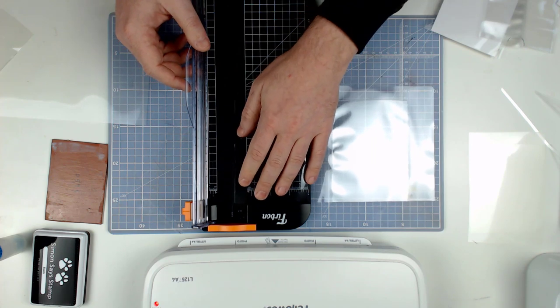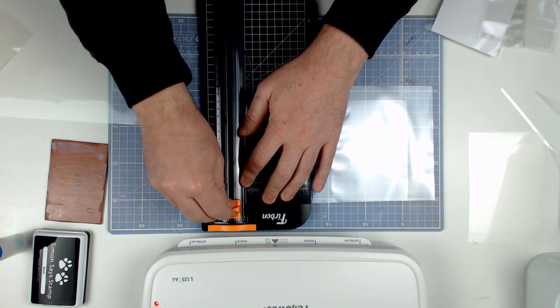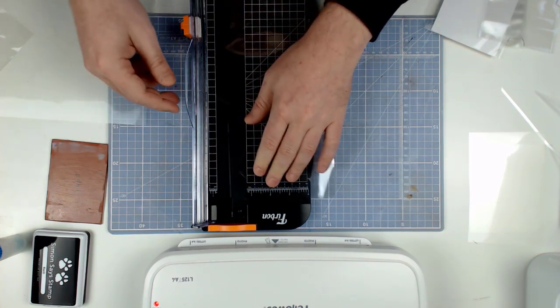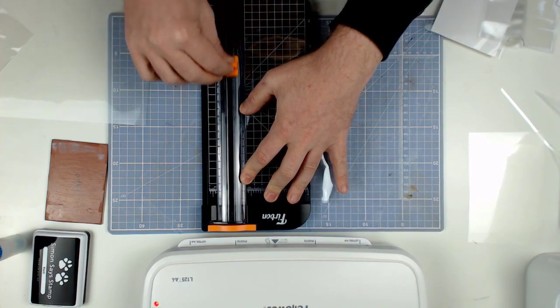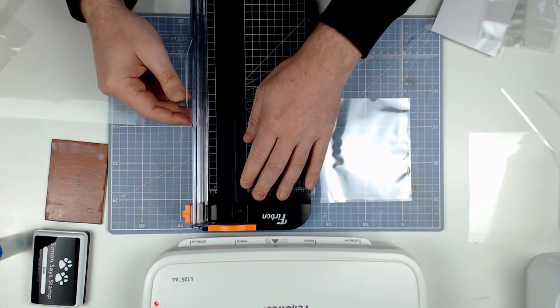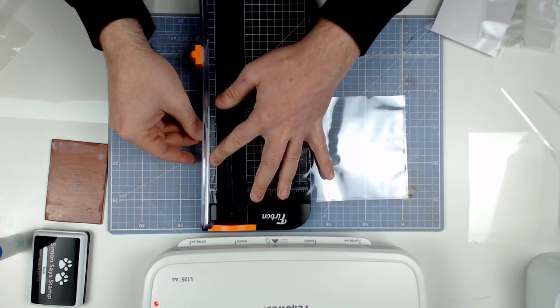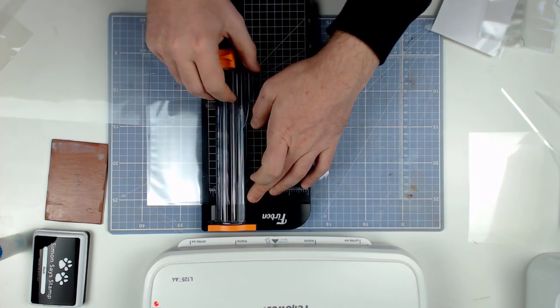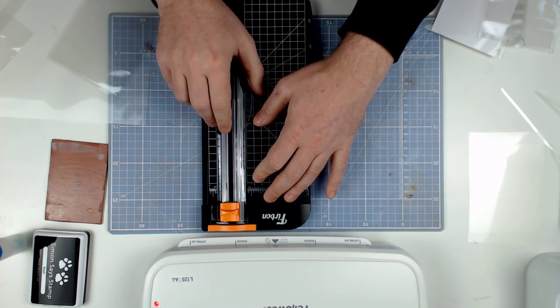Then I am going to trim around the remaining edges, leaving about three millimeters or an eighth of an inch. So basically what happened with that laminating process is because the glossy sides were together, they have resisted each other. And obviously the adhesive side of each of the laminate pieces has fused together. So we need to leave some of it connected around the edge, but obviously we want to trim that off at the top so that we have got an opening.